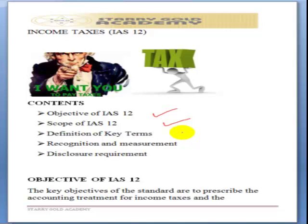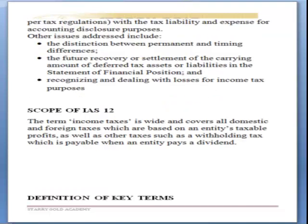The key objective of IAS 12 is to prescribe the accounting treatment — how taxes should be treated in our books. It also establishes the distinction between permanent and timing differences, which arise as a result of the difference between accounting profits and taxable profits.